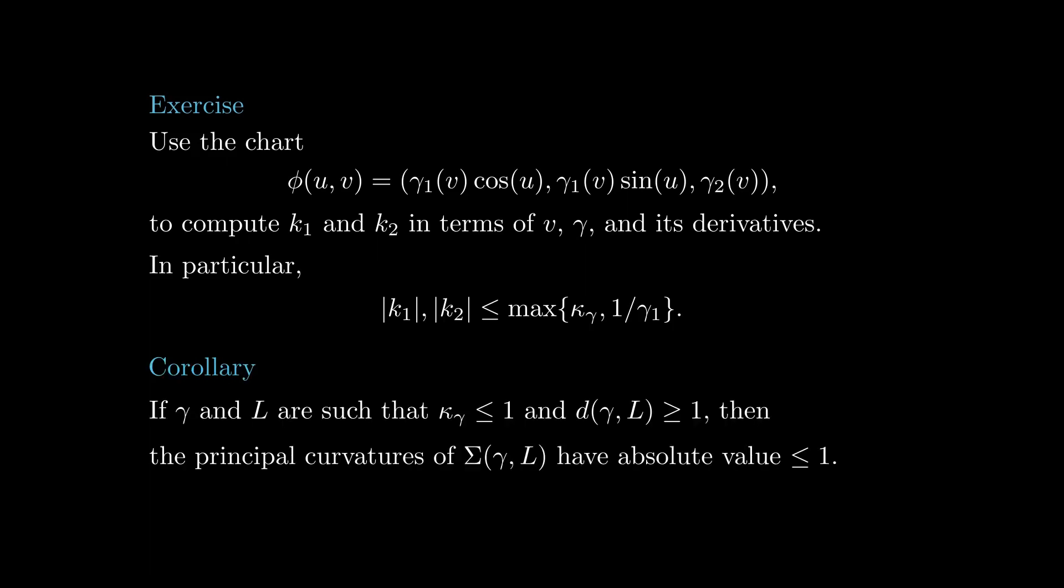This gives a recipe to construct surfaces of revolution with small curvature. If a plane curve gamma is such that its absolute curvature is bounded by 1, and is at distance at least 1 from a line L, then the principal curvatures of the surface of revolution associated to gamma and L are bounded by 1 in absolute value.